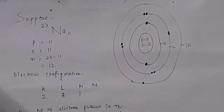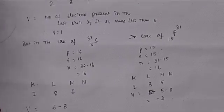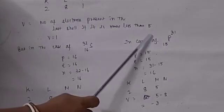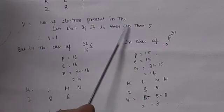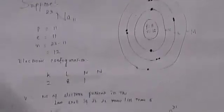Next is valency. What is valency? Valency is the combining capacity of an element — that means by how many bonds it can combine. Valency is calculated as the number of electrons present in the last shell if that number is less than 5. For sodium, the last shell contains 1 electron, so valency is 1 because it is less than 5. In the case of sulfur 16/32, where 16 is the atomic number and 32 is the mass number: number of protons is 16, electrons is 16, and neutrons is 32 minus 16, which is 16.